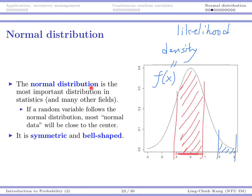It turns out that the normal distribution has a rigorous mathematical definition, and it is the most important distribution in statistics. Starting from now, in almost every week, you will hear the term normal distribution, and it will be used again and again. The name 'normal' has many meanings. If a random variable follows the normal distribution, most so-called normal data will be close to the center.